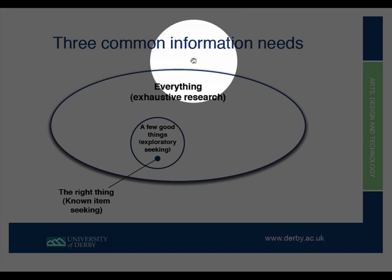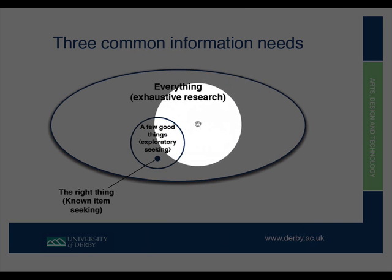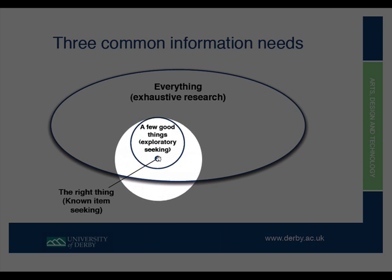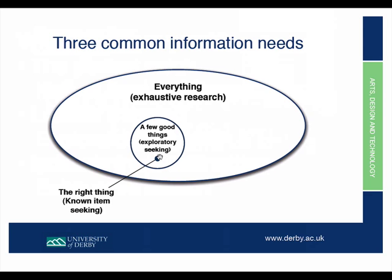Shown diagrammatically, each search type has its own sphere. The 'everything' search is a massive big search of absolutely everything. Exploratory seeking is a slightly smaller one. The smallest is known item seeking — when you know what you want. For example, if you go into someone's website wanting to look at photographs of horses, you go to their website and expect to find a category that says 'horses'. If you're looking at animals generally, you might look at a category that says 'animals' and see what's underneath.